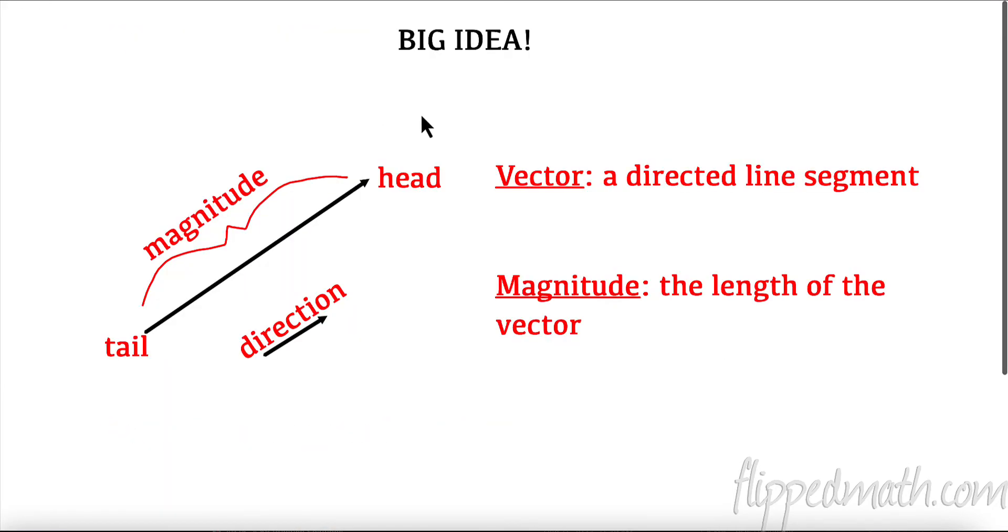Big idea. What is a vector? A vector is a directed line segment. And it is made up of a few things: it is made up of direction and magnitude. And what is the magnitude? The magnitude is the length of the vector.